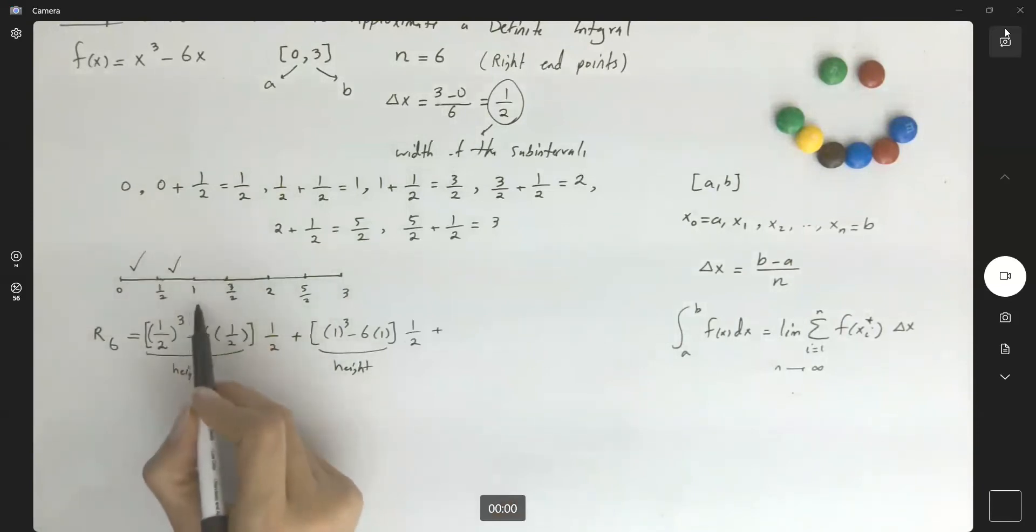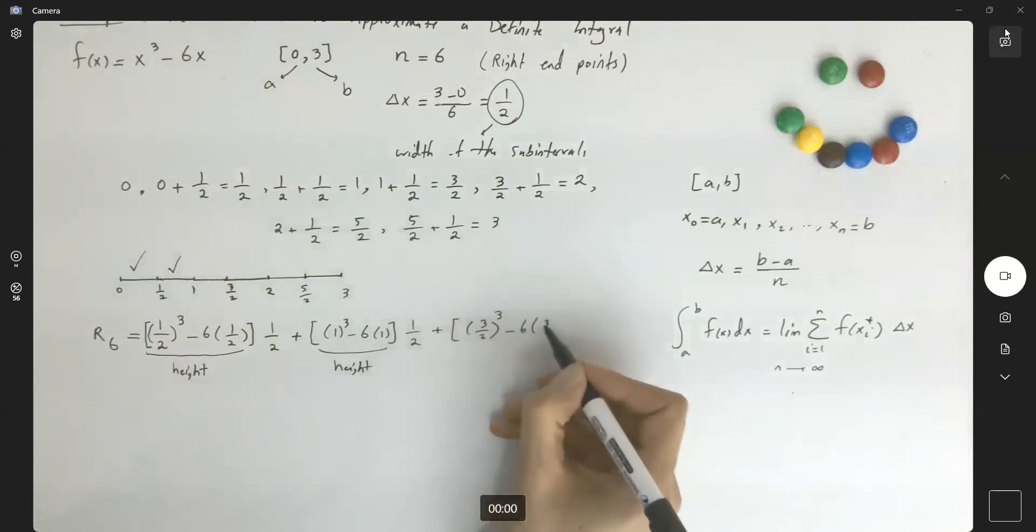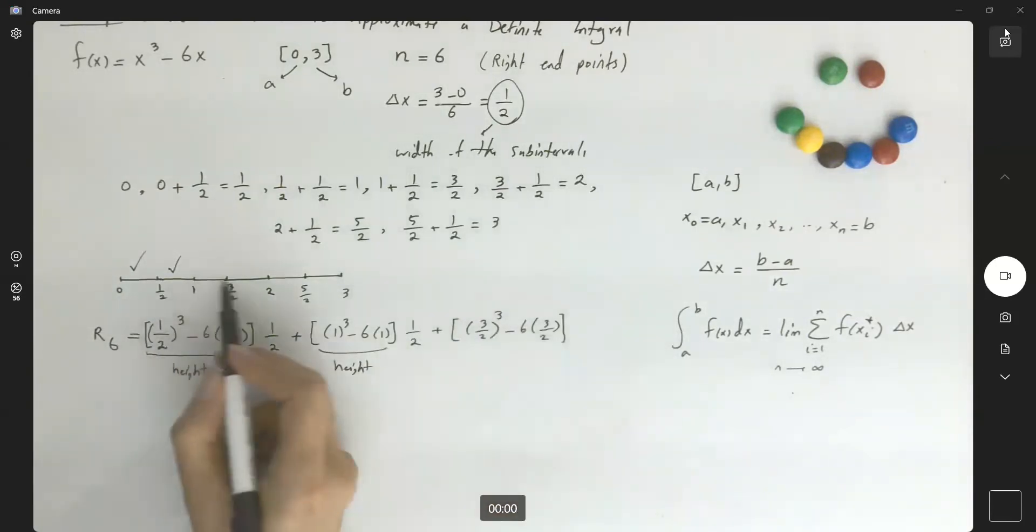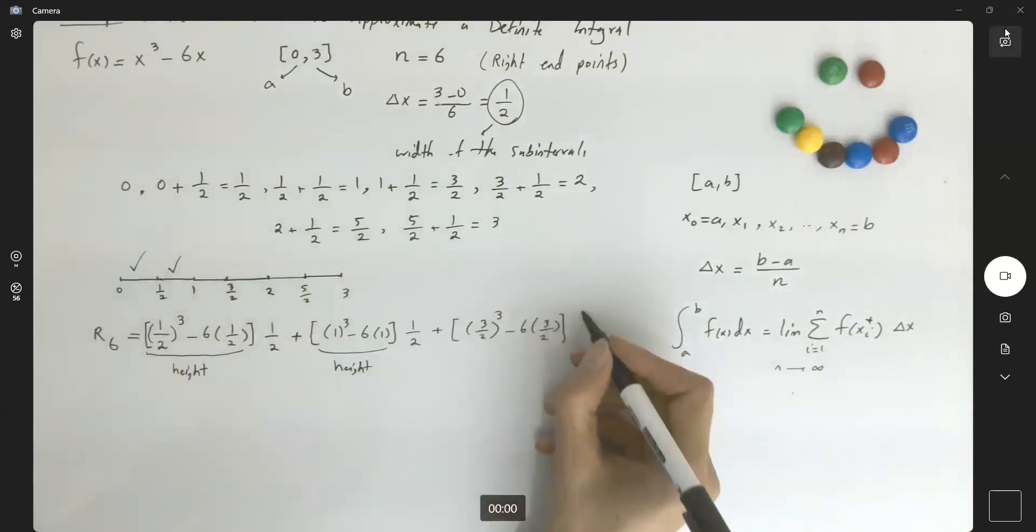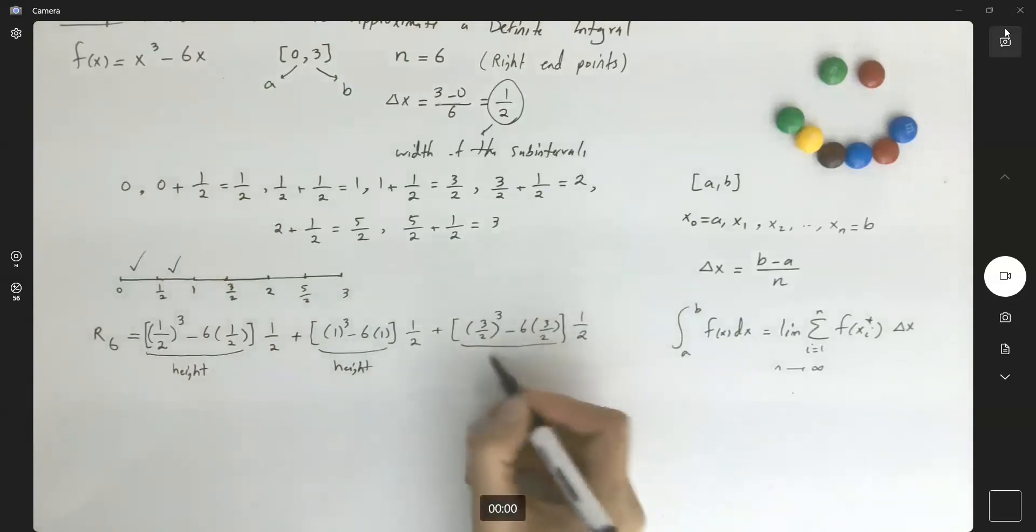Now you're working with the third subinterval. To find the height, you're going to enter the right endpoint, which is 3 halves. So you're going to enter 3 halves to the function minus 6 times 3 halves. This is the height multiplied by the width, which is a half. Continue this. So again, we have a height here, plus.